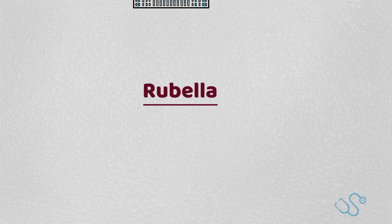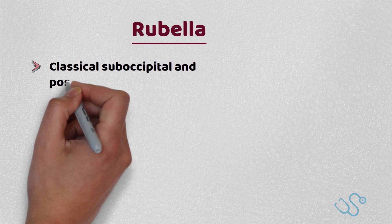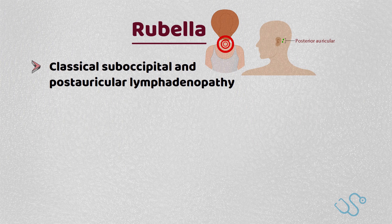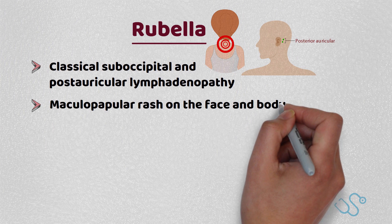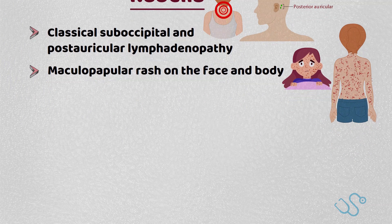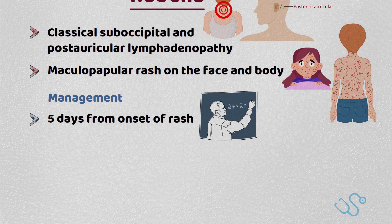Rubella — thankfully this is quite rare. However, you need to know that it presents as a classical suboccipital and postauricular lymphadenopathy associated with a maculopapular rash on the face and body. For your exams, you need to know the school exclusion criteria: five days from the onset of the rash.